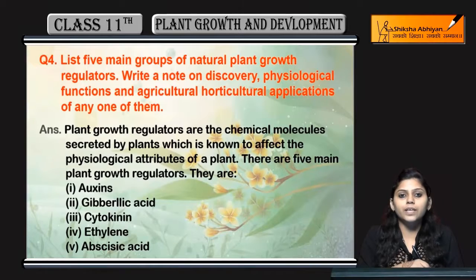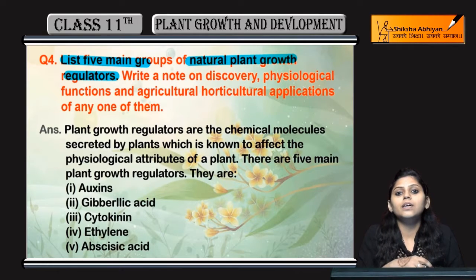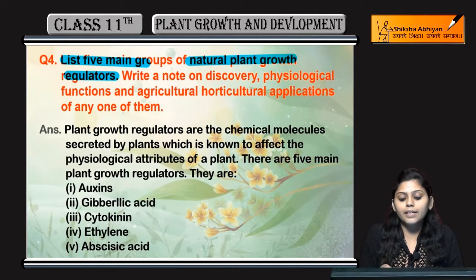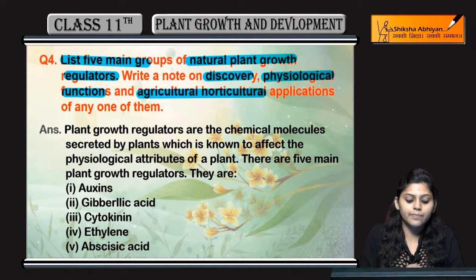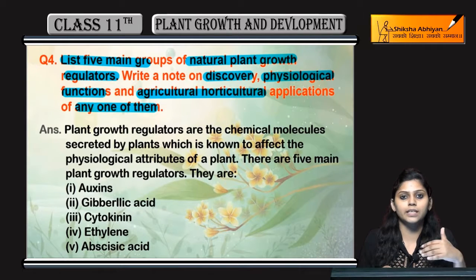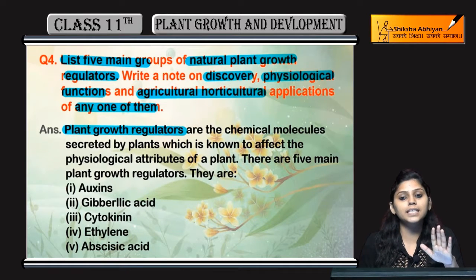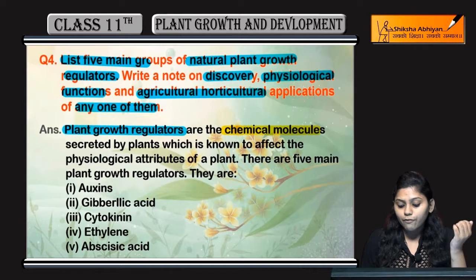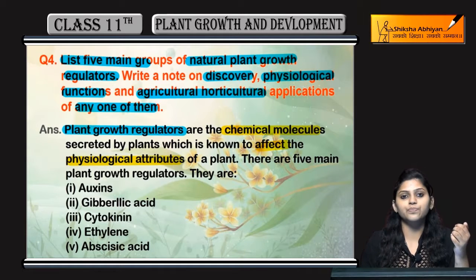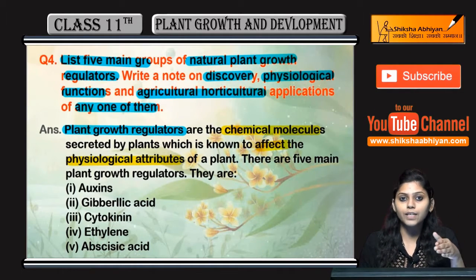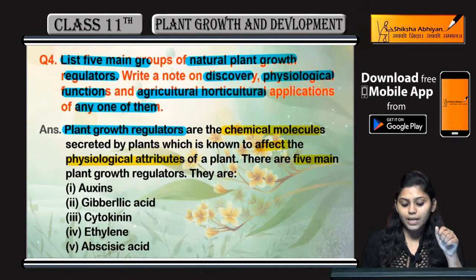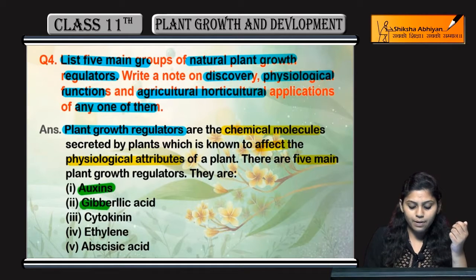Coming to question number five: list five main groups of natural plant growth regulators. Plant growth regulators — we have to name five main ones. Write a note on their discovery, physiological functions, and agricultural/horticultural applications. Plant body secretes some chemical molecules which affect their physiological attributes — any physiological function like growth is affected by these plant growth regulators. The five main plant growth regulators are: auxins, gibberellic acid and gibberellins,